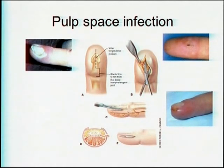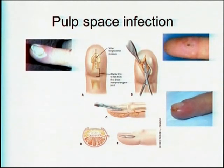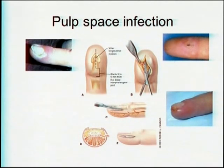For Felon, you need to drain it properly, preferably through a midline incision. Let the pus out and then let it heal normally.